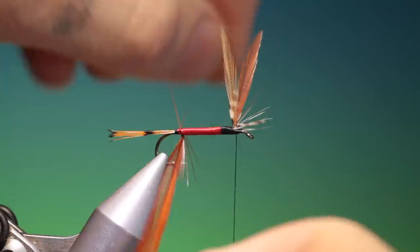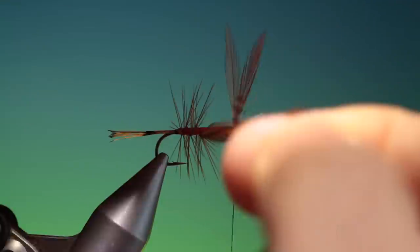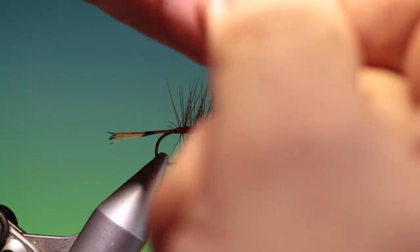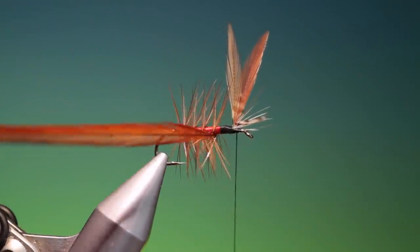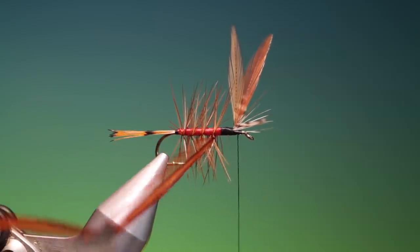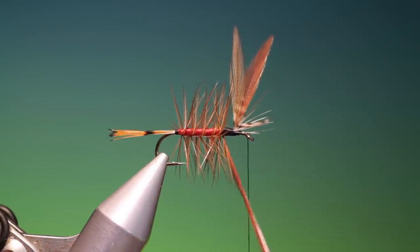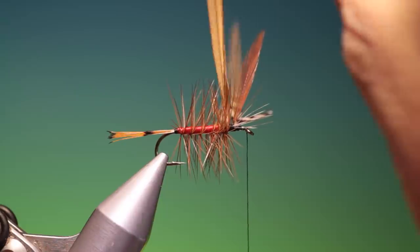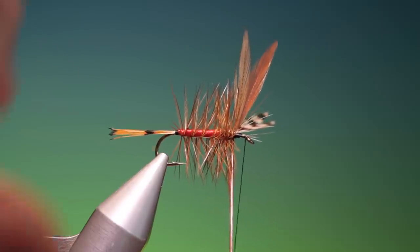Then we'll palmer a hackle over the body. And then when we get to there, I like to put a hackle plier on for this last bit. I'll put that on there. Then we want to wrap the hackle more densely as we get to the wing. Like this.